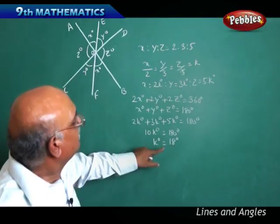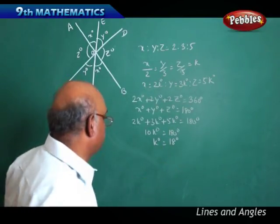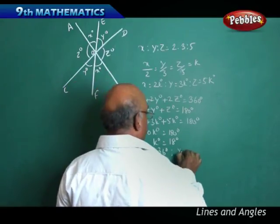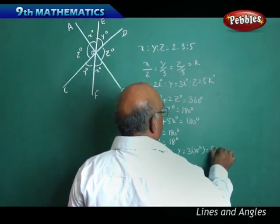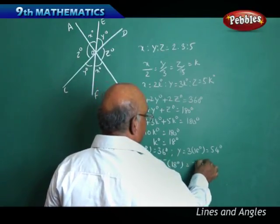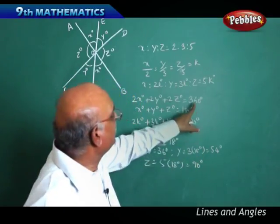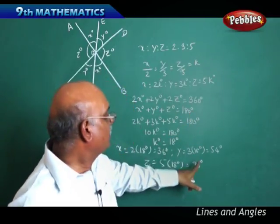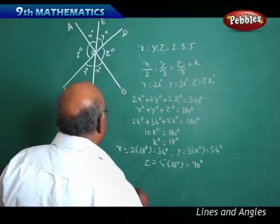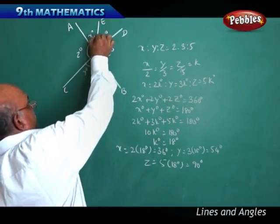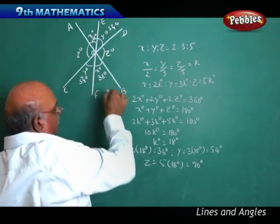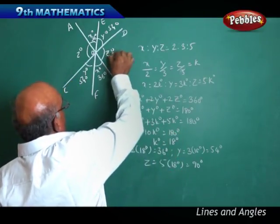When K is 18, X equals 2 times 18 = 36 degrees, Y equals 3 times 18 = 54 degrees, and Z equals 5 times 18 = 90 degrees. So 90 plus 90 is 180, and since each appears twice, the total is 360 degrees. In the figure: this angle is 36 degrees, Y is 54 degrees, and Z is 90 degrees.